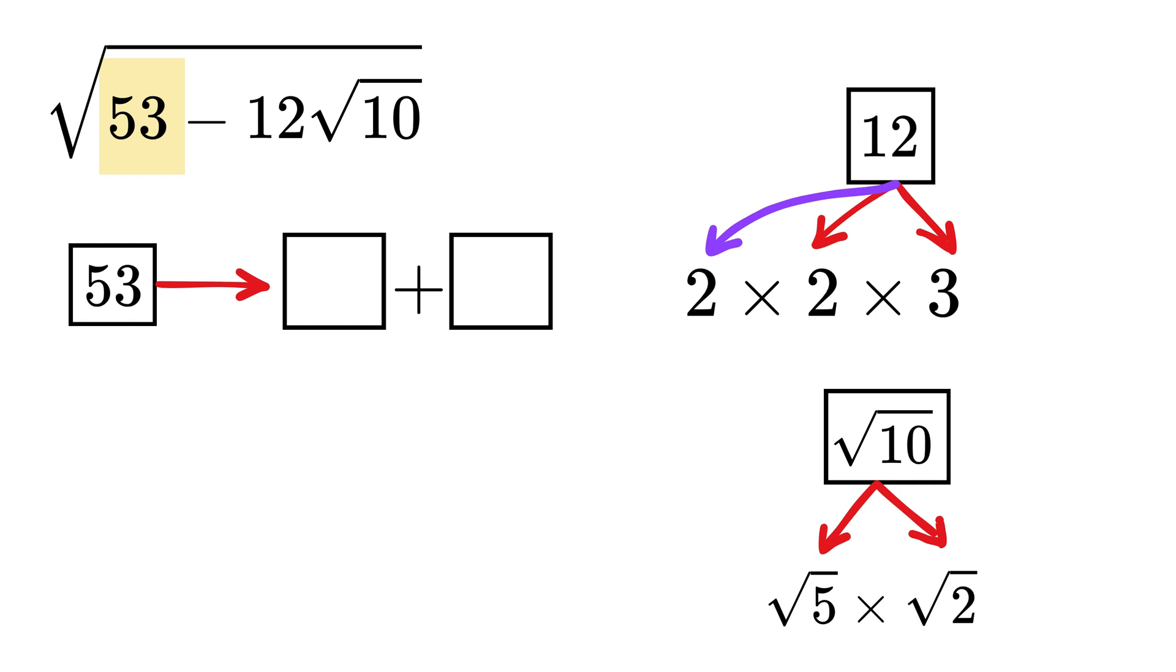Here, 53 can be written as 45 plus 8. Again, this choice is not random. 45 and 8 are exactly the values we get when we square the terms that appear as the factors of 12 root 10.